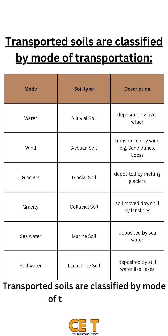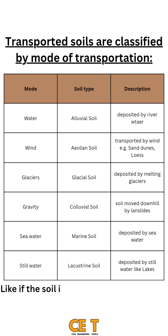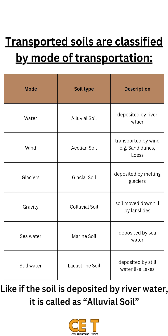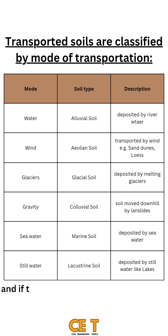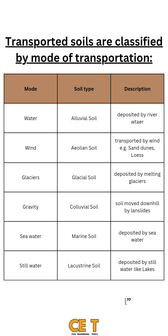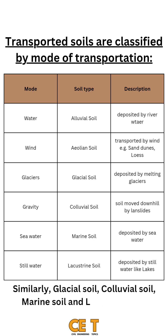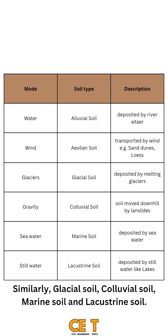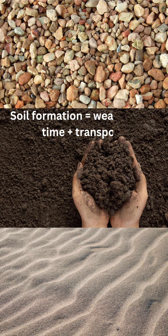Transported soils are classified by their mode of transportation. Soil deposited by river water is called alluvial soil; soil transported by wind is called aeolian soil. Similarly, there is glacial soil, colluvial soil, marine soil, and lacustrine soil. In summary: soil formation equals weathering plus time plus transport.